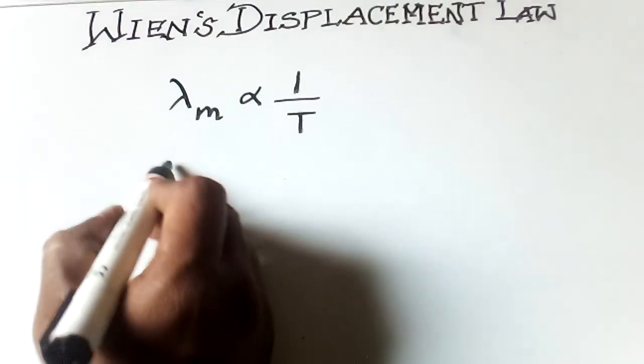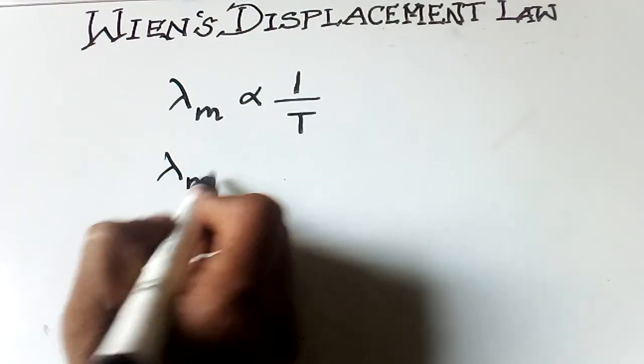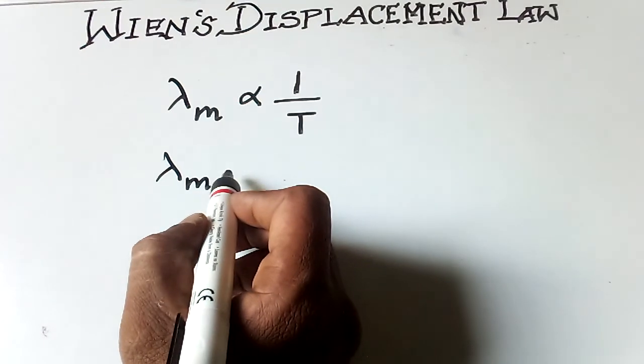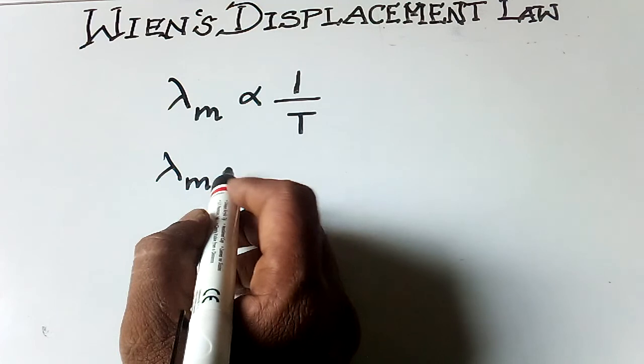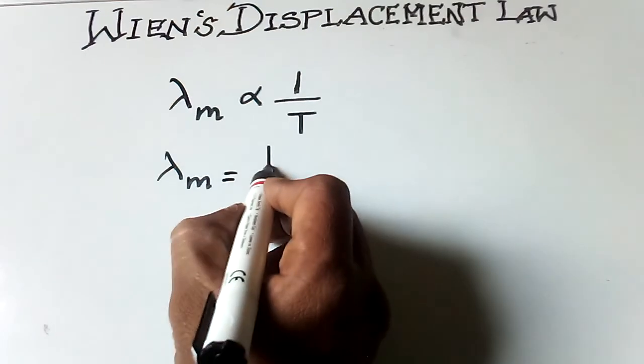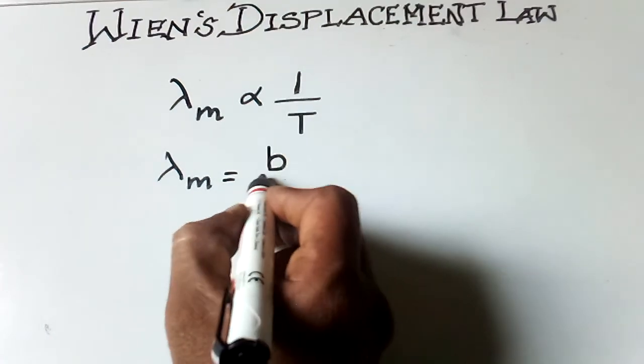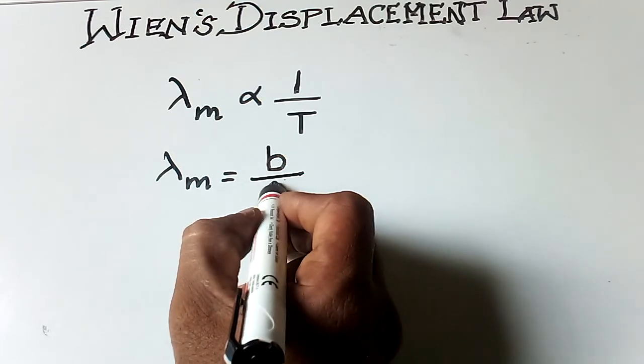So this relation can be written as lambda m, that is, wavelength of maximum density of emission of a black body, lambda m is equal to, we have to introduce some constant, that is b, by T.